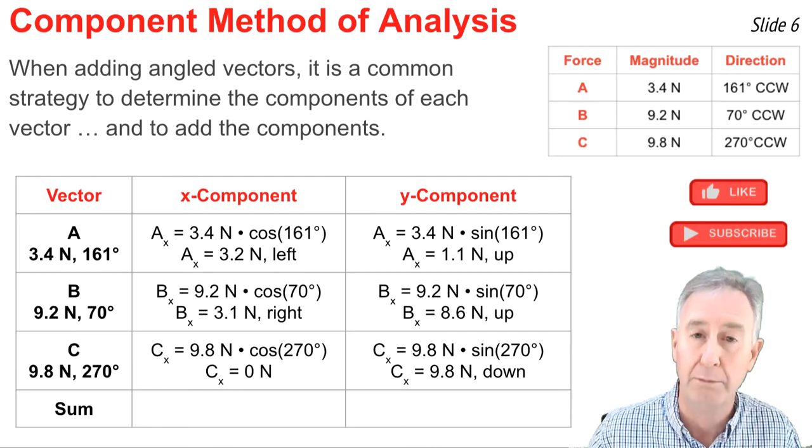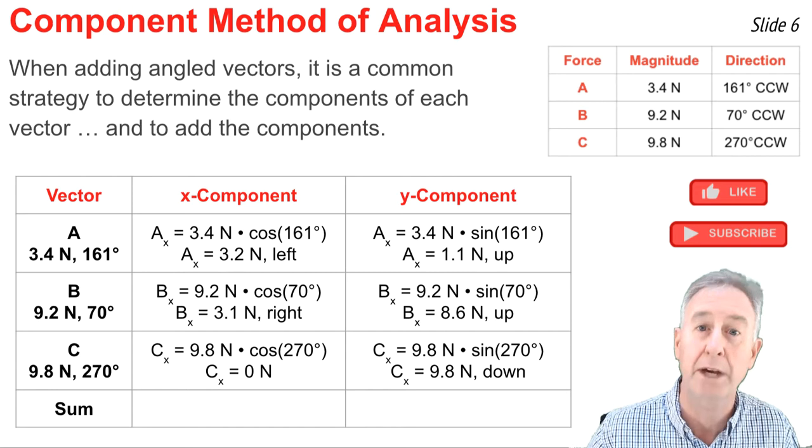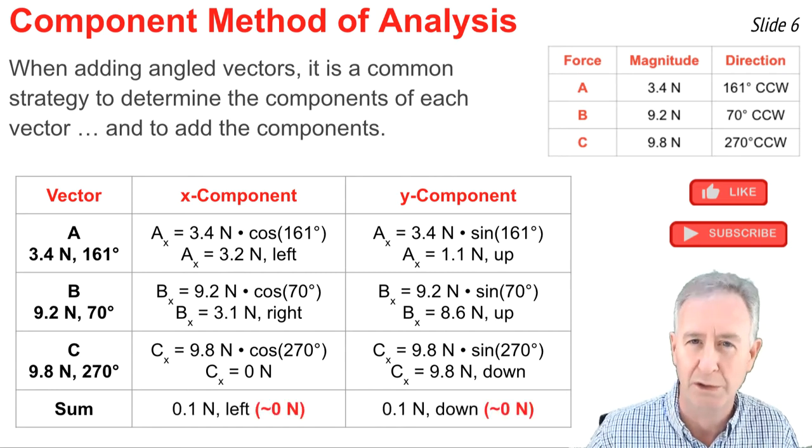When I'm done, I can sum up all the components. I can add my 3.2 newtons left, my 3.1 newtons right, and my zero newtons. And when I do, I get approximately zero newtons.